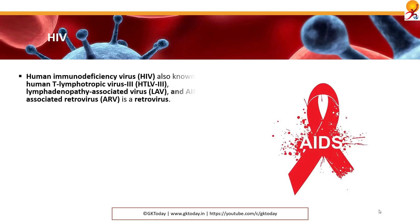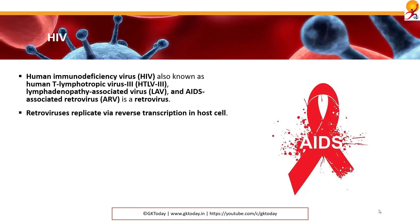HIV, or human immunodeficiency virus, also known as human T-lymphotropic virus 3, lymphadenopathy-associated virus, and AIDS-associated retrovirus, is a retrovirus. Retroviruses are those that can replicate via reverse transcription in host cells.